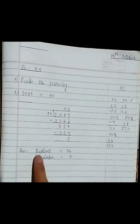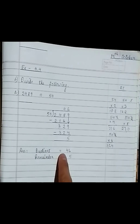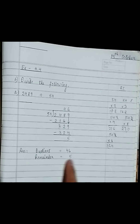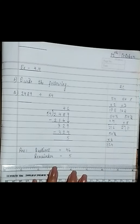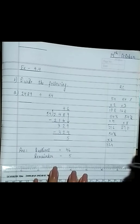We write the answer: quotient is equal to 46 and remainder is equal to 5. When you finish, draw a long line.